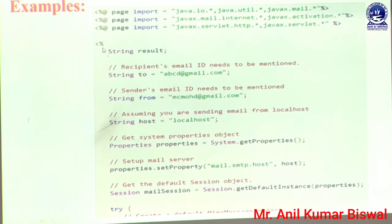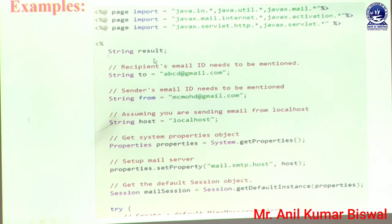Next we need to define our scriptlet tag. By using the scriptlet tag we can write JSP code, which must be embedded in our part. If a user wants to add any type of JSP code it must be embedded within this scriptlet tag. In that scriptlet tag we must define a String object named 'result' — instead of this name you can write any name such as a, b, obj, whatever, but here we define 'result' because it is related to our topic.